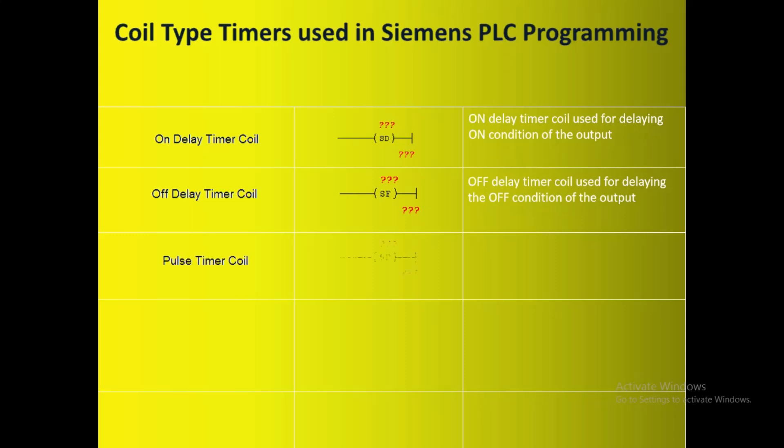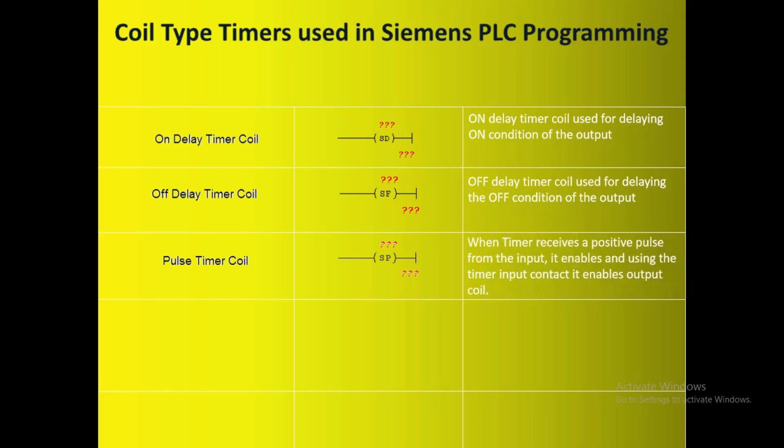The next one is the Pulse Timer Coil, and this is the notation used in PLC for this timer. When the timer receives a positive pulse from the input, it enables the output coil. The timer remains in the on condition as long as the input condition is on or the accumulator value reaches the preset value. If the input changes from one to zero before the timer interval has elapsed, the timer stops along with disabling the output. A reset coil from the bit instructions needs to be used separately to reset the timer.